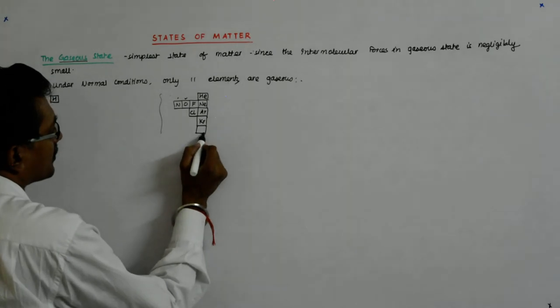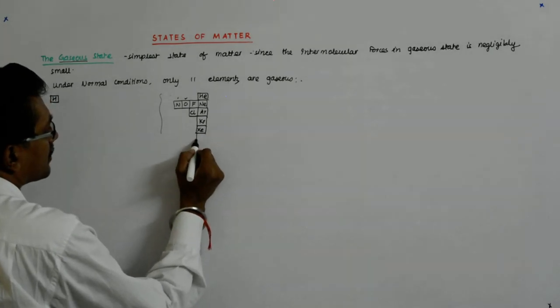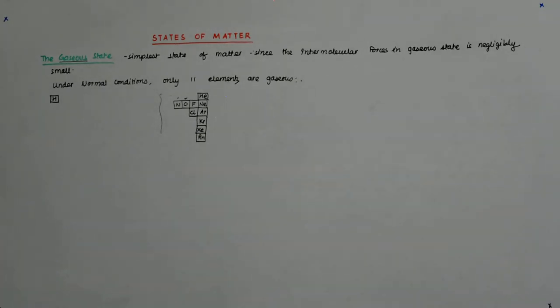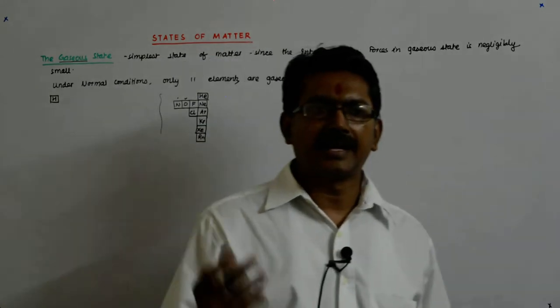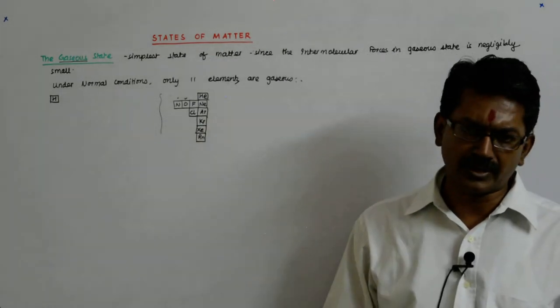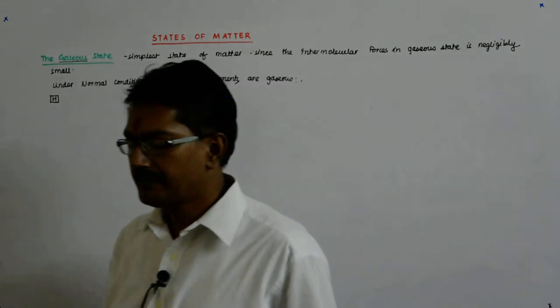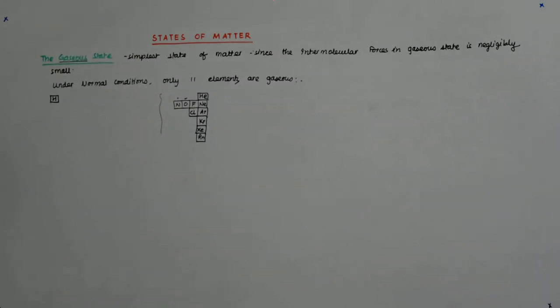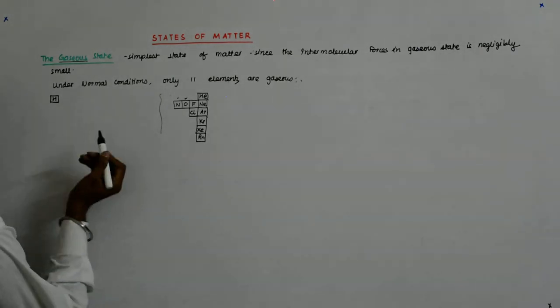Krypton, xenon, and radon. These are the only ones. At 5000 degrees centigrade everything vaporizes, but we are not talking about that. We are talking about NTP or STP. Now there are certain simple characteristics of gases.